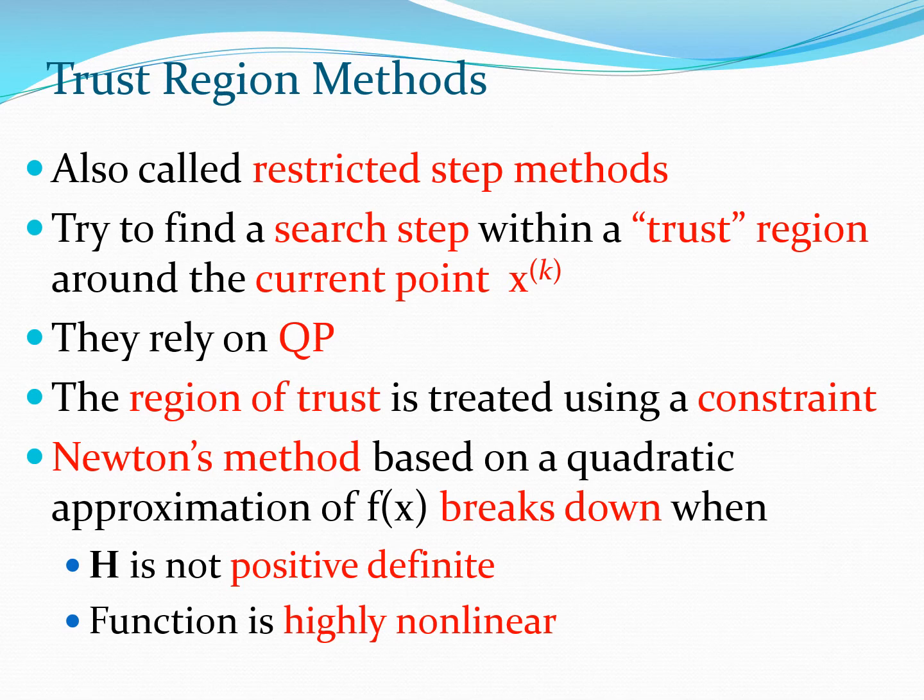Now there is a broad class of methods which go by the name of Trust Region Methods. These are also known as Restricted Step Methods and the basic philosophy behind these methods is to try to find the search step within a certain region which is a Trust Region. And essentially you take a current point x of k, you try to determine a region of trust around it where the approximation you have developed for the objective function is valid and then to basically stay within this region of trust and to move forward in the design space in this manner.